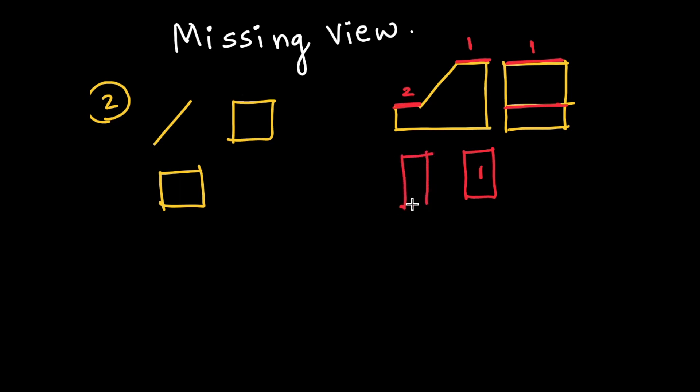Now if you see this part, slope one. See this? This incline in one view, so other two views will be same. Over here it is rectangle, so in top view also it will be rectangle. See this?